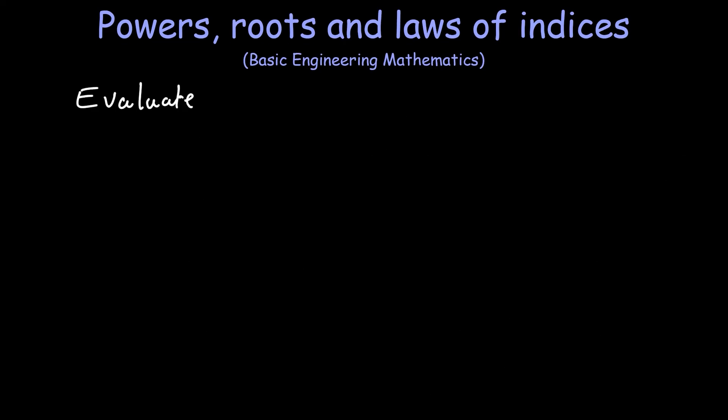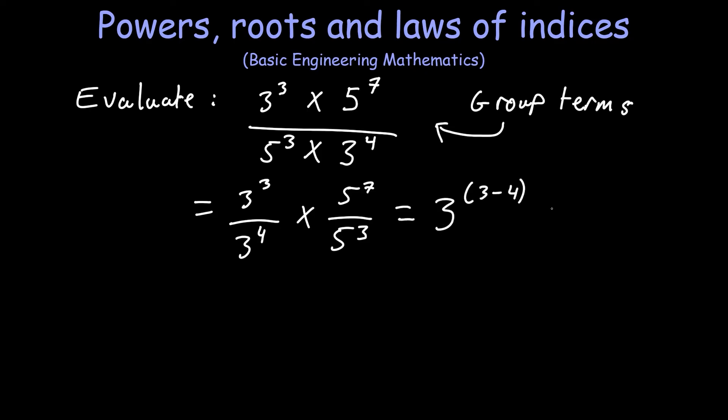The last example question is a bit more difficult. As we can see with this example, we have two different bases. After grouping similar bases together, we can apply law 2. And because we have a base to the power of a negative index, we can use law 5. We finally end up with a value of 208 and a third.